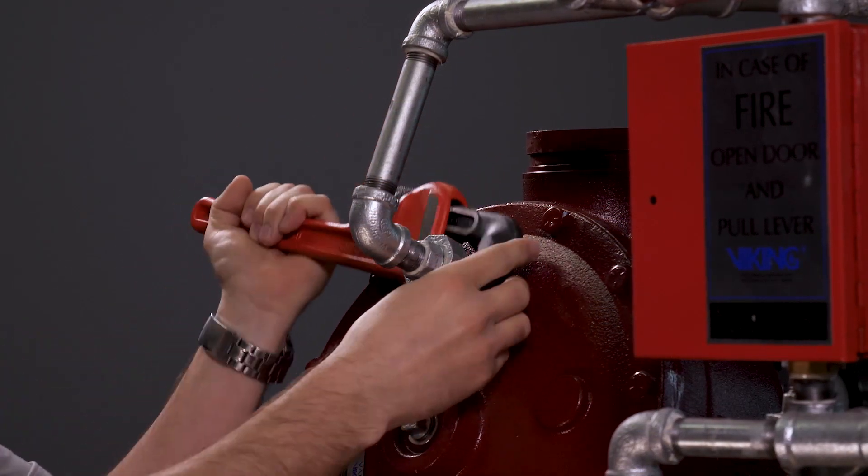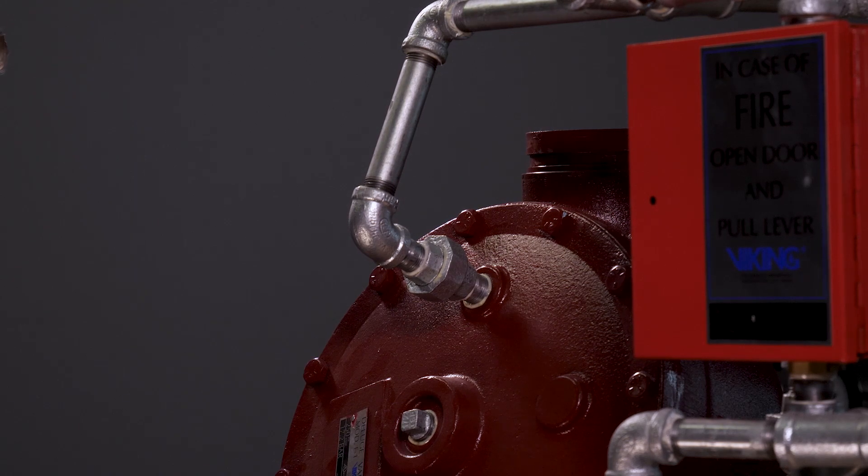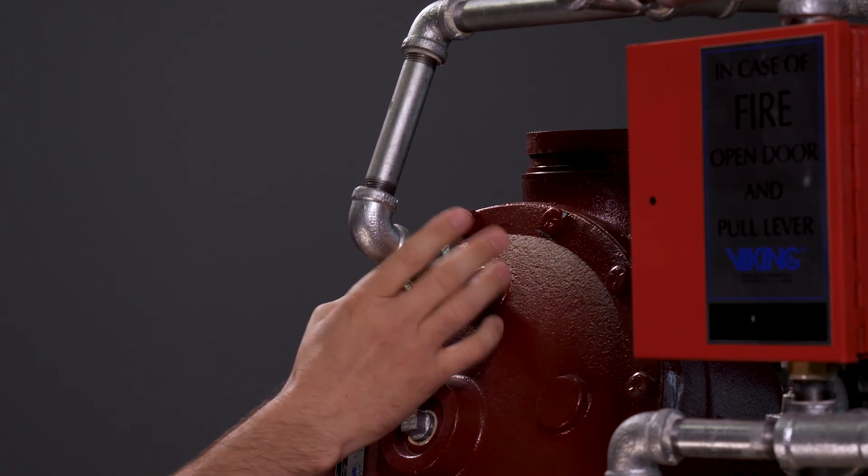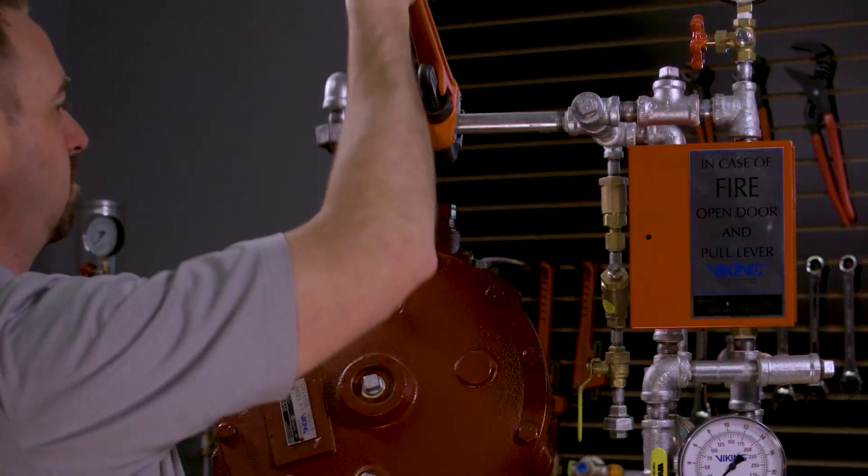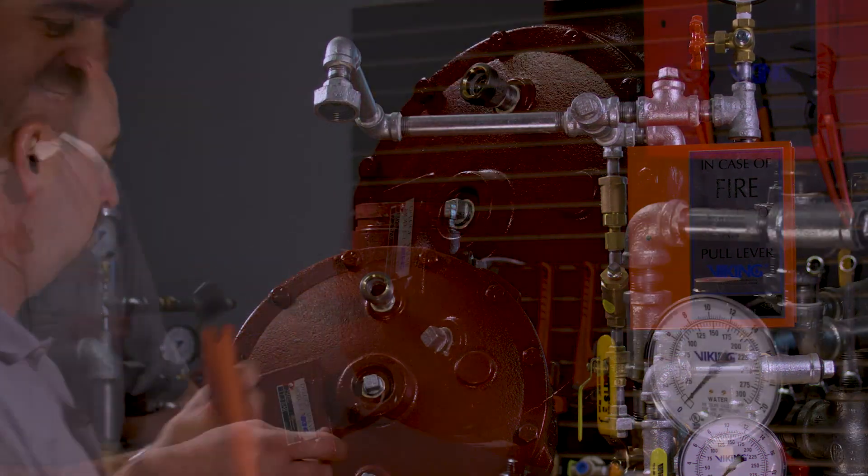To replace the seat, we will first need to open the union on top of the priming chamber and move the associated trim in order to access the cover.